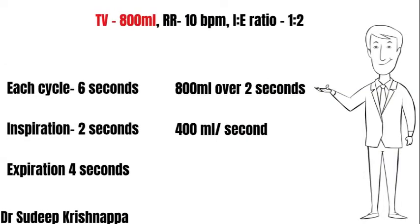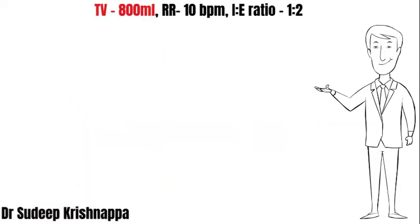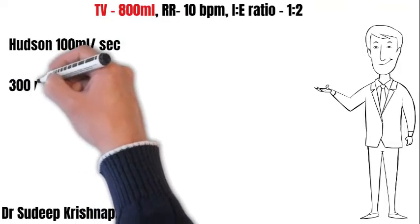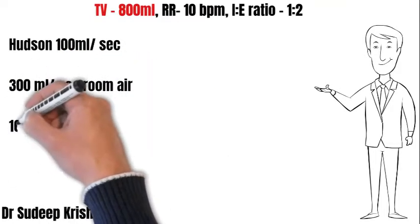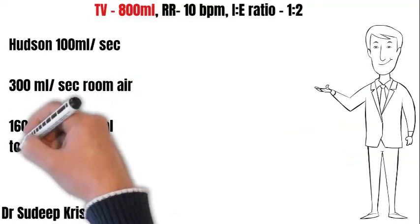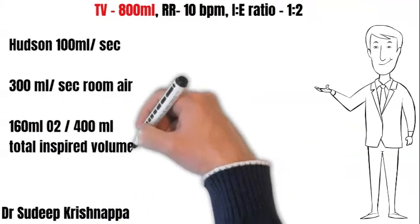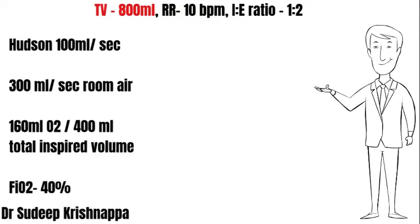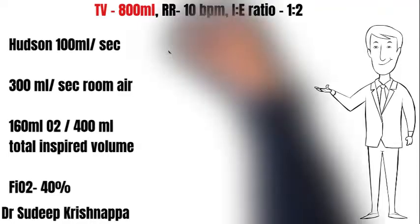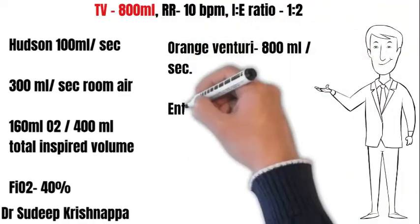How does Hudson's face mask perform in this second scenario? The mask provides 100 mL per second, but the total volume needed each second is 400 mL. The remaining 300 mL has to be room air, which contains about 60 mL of oxygen. Therefore the total 400 mL inspired each second has an oxygen content of 160 mL, translating to an FiO2 of 40%. So we note the FiO2 has dropped from 52% to 40%.